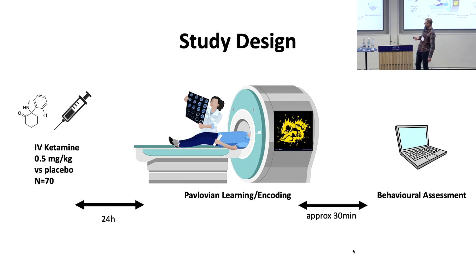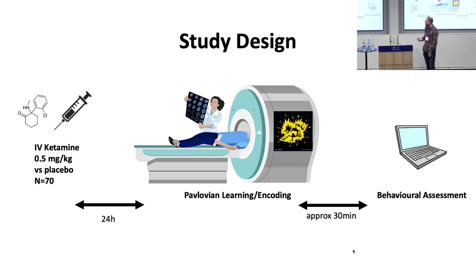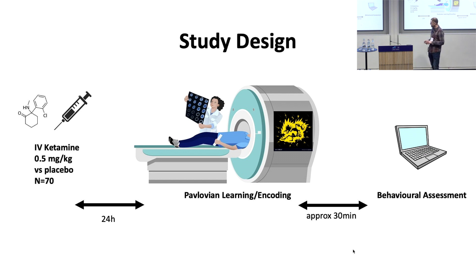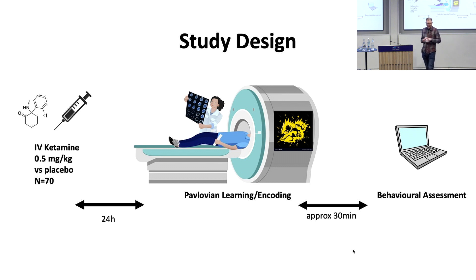We randomized 70 healthy participants without any psychiatric history into ketamine versus placebo groups in a one-to-one ratio. 24 hours after the infusion, participants did the Pavlovian learning task inside a seven-Tesla MRI scanner, and approximately half an hour later, we gave them a behavioral assessment in the form of a preference test, where they saw random combinations of all the shapes they had learned in the task and declared their preferences between these shapes.